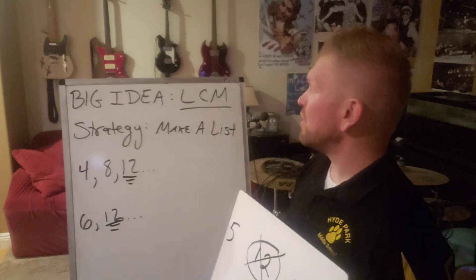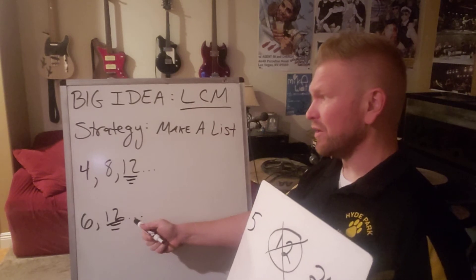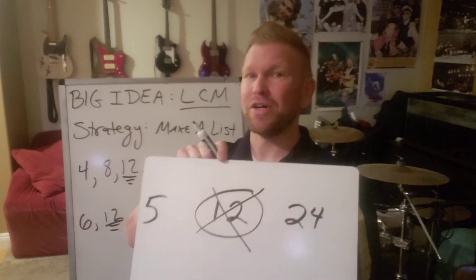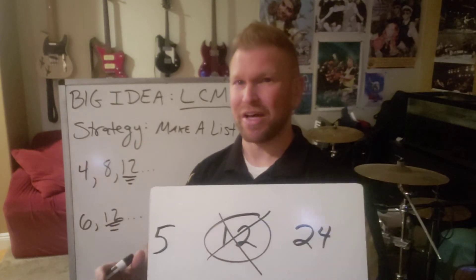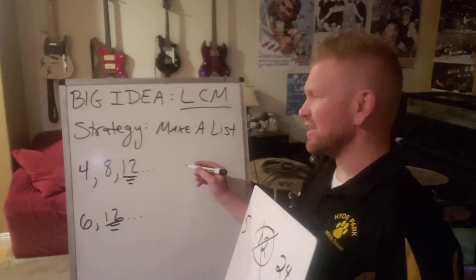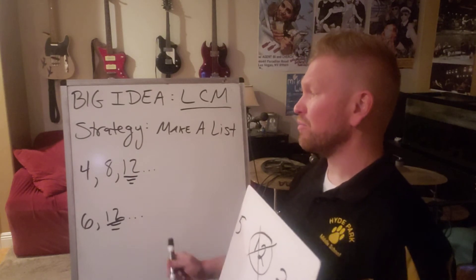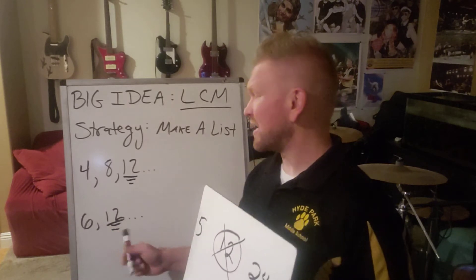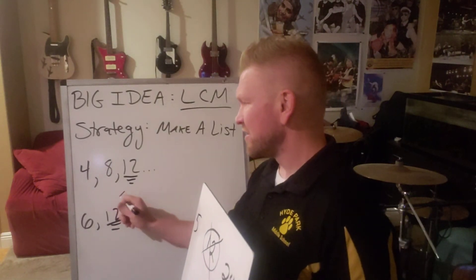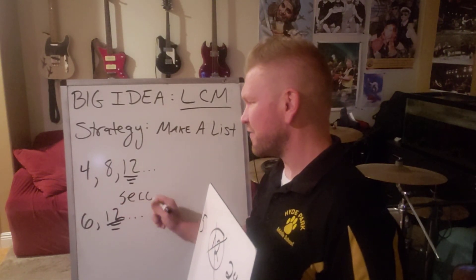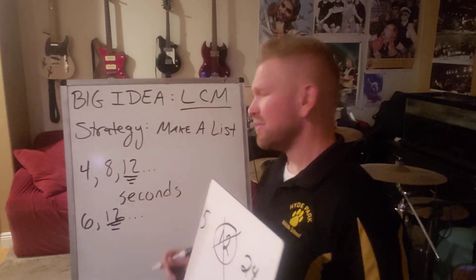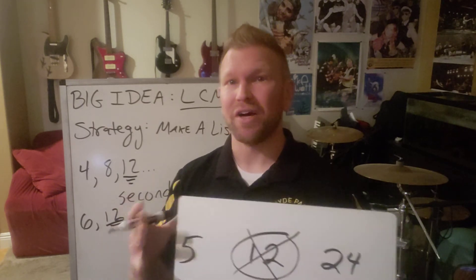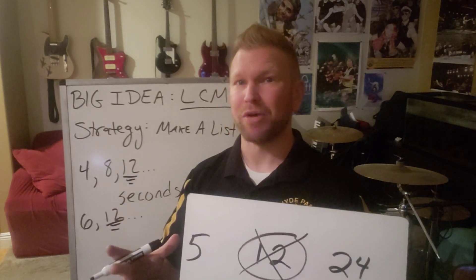Even though we do want to make a list and find common multiples like 12, the answer is not the least common multiple. Because the question was, how often are they going to blink at the same time? We needed to extend that list to find out they don't blink 12 times at the same time, even though they both blink at 12 seconds. So 12 seconds is the first time they blink together, but that was not the question asked. So 12 is the distractor. Watch out for distractors in other multiple choice problems as well.